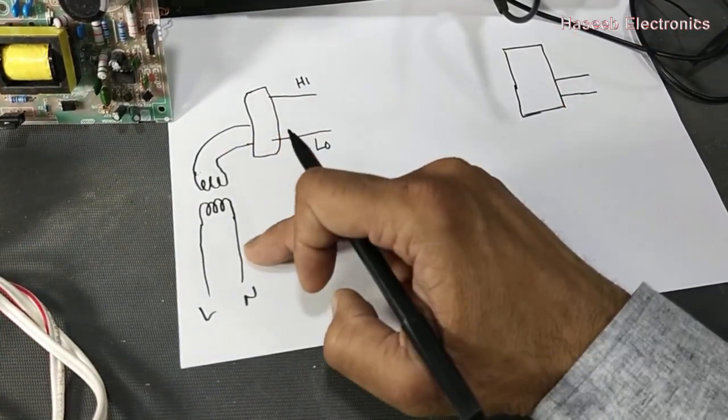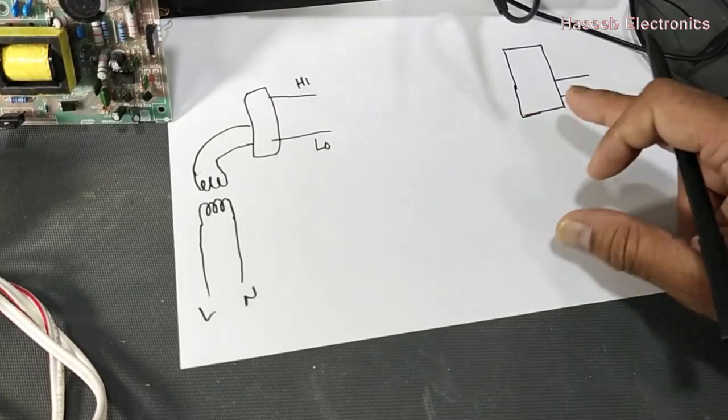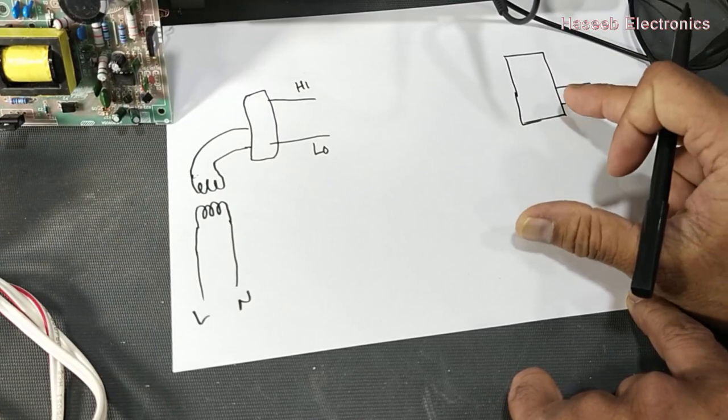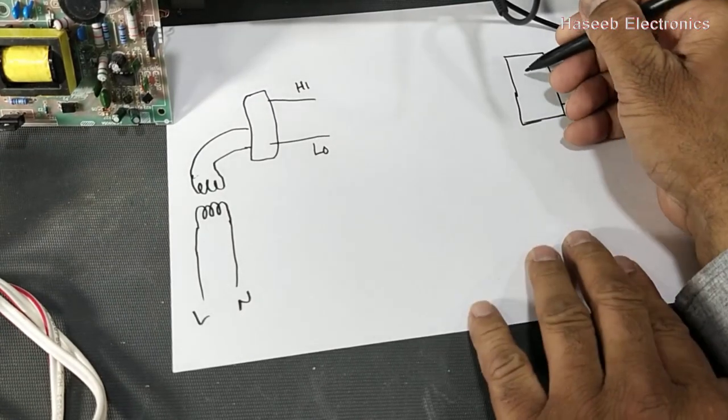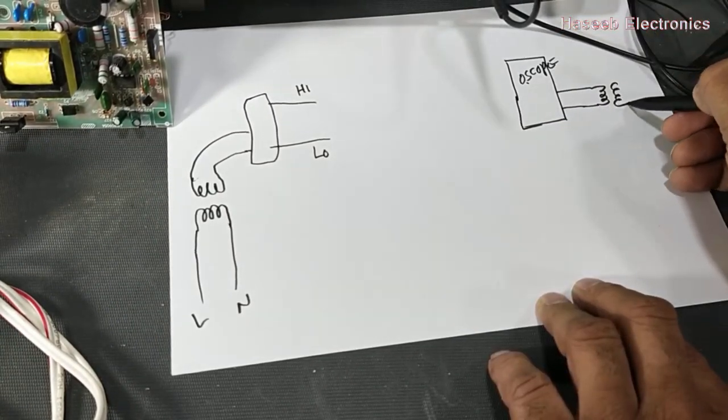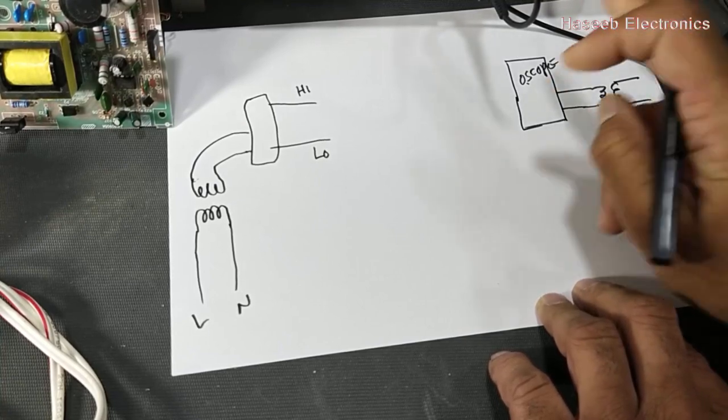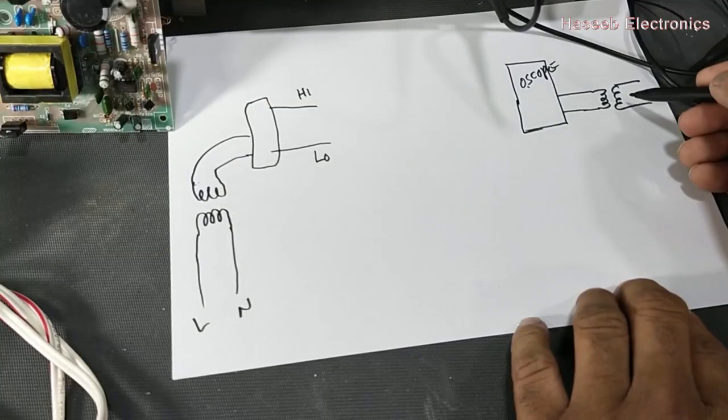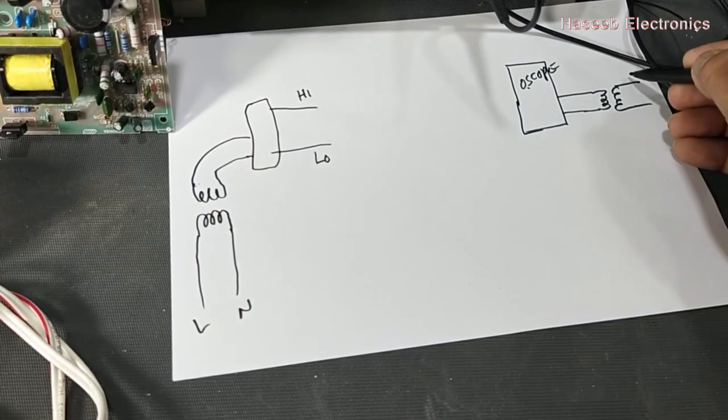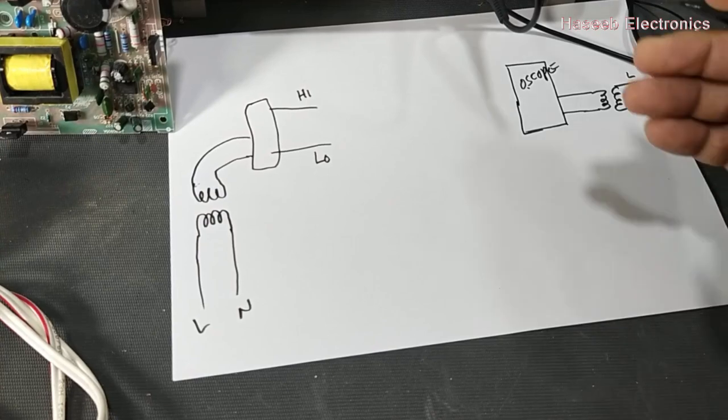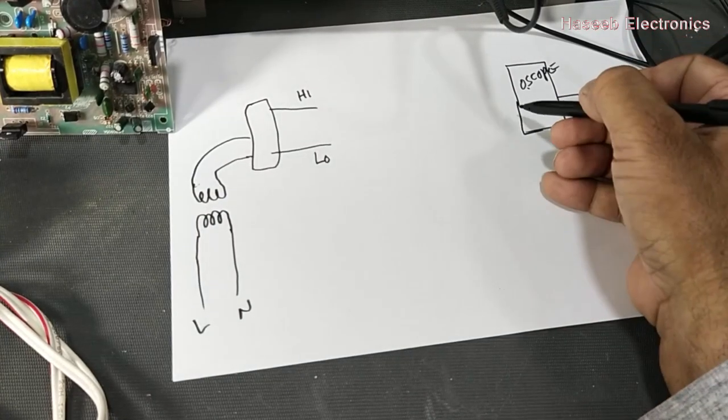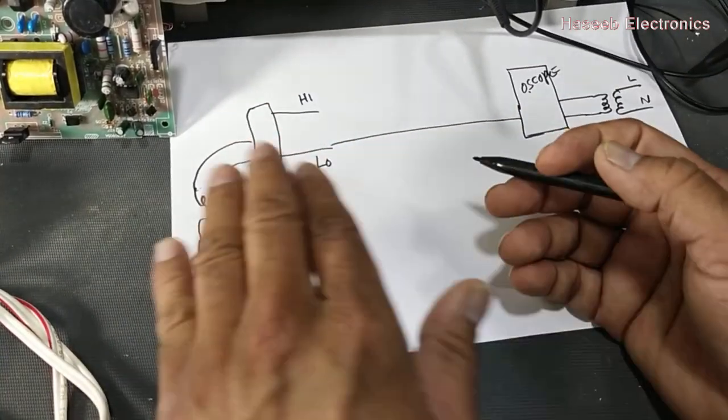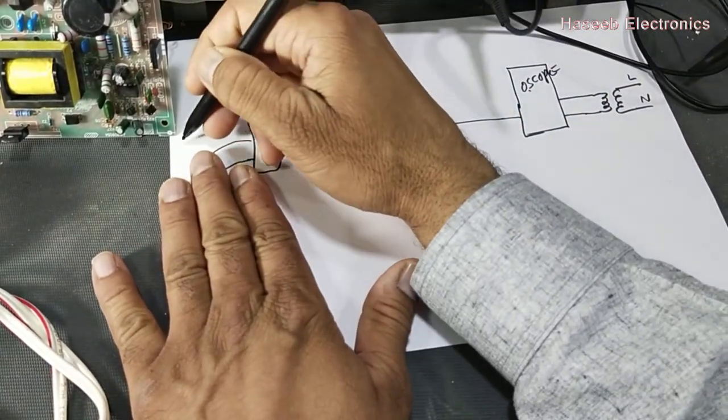Most of the time we don't have this facility in our workbench. For that reason, we can use an isolation transformer for our oscilloscope. I am using an isolation transformer for my oscilloscope, so it will be isolated from the line voltage.